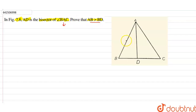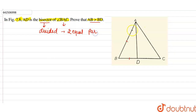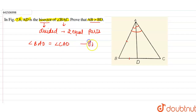We have to prove AB is greater than BD, so we talk about triangle ABD. Bisector means that an angle is divided into two equal parts. Since AD is the bisector of angle BAC, that means angle BAD will be equal to angle CAD.